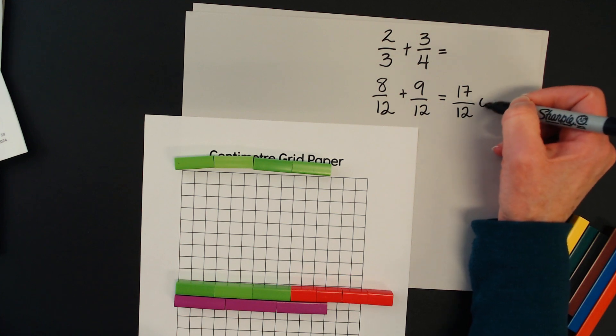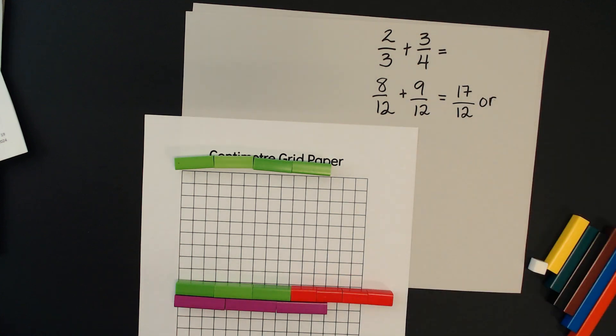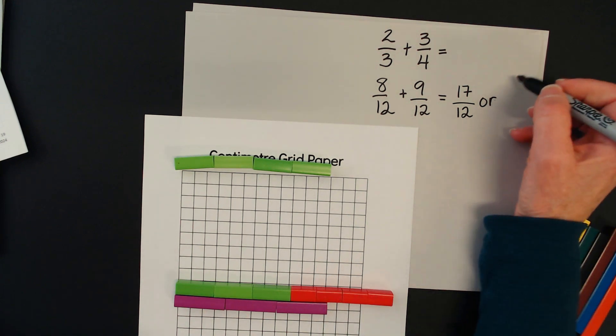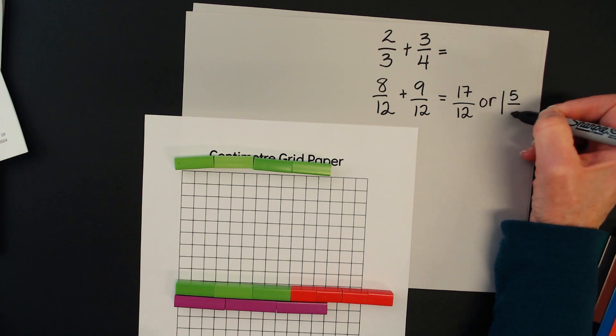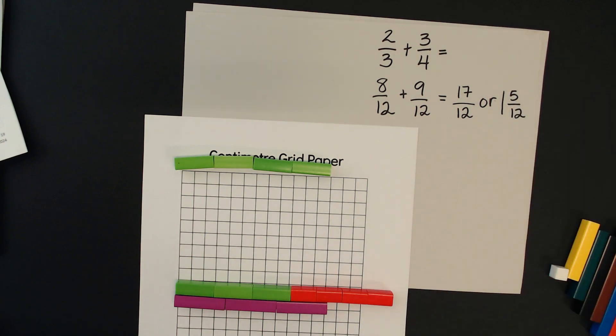Now I know that that is an improper fraction. So I see that here's one whole, and then I have two, four, five, another five twelfths. So I have one and five twelfths. And here's one way in which we can use the Cuisenaire rods to add fractions with unrelated denominators.